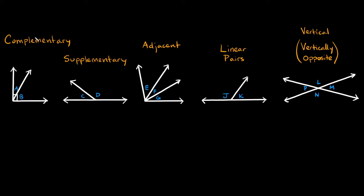So you're probably familiar with complementary and supplementary already, but I'll quickly go over them here. Complementary angles are just two angles that add up to 90 degrees. So we can say that angle A plus angle B is equal to 90 degrees. Supplementary angles are two angles that when you add them up they equal 180 degrees, so angle C plus angle D is equal to 180 degrees.